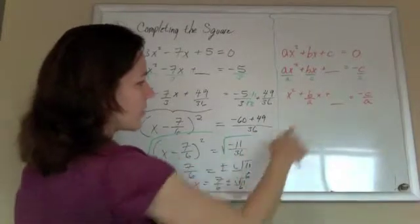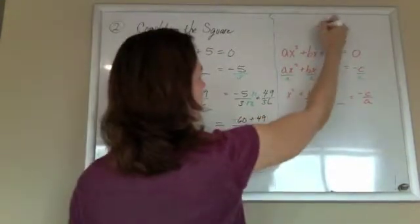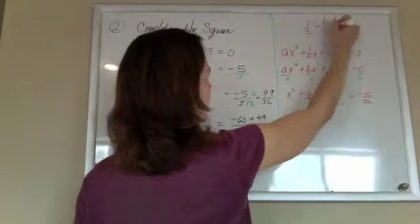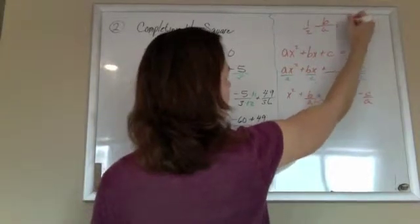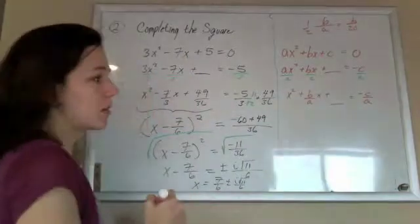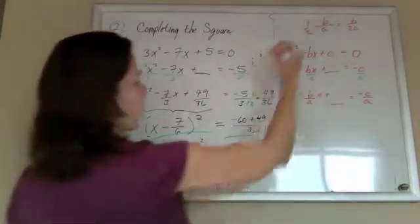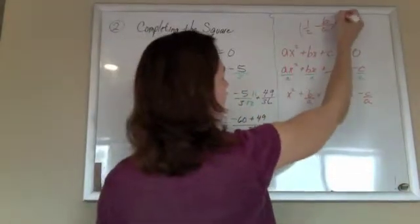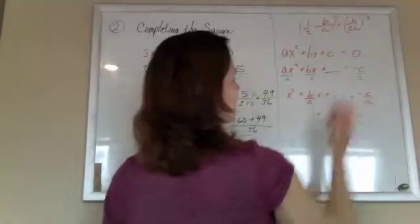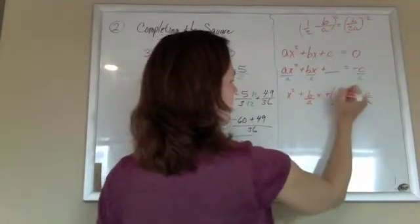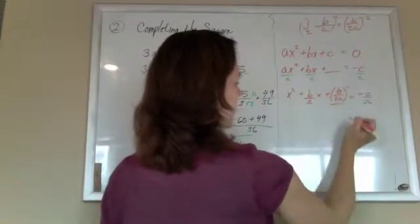So half of b over a is b over, sorry, I mean half of b over a, so that's b over 2a. And I want to square that, so that's b over 2a squared.